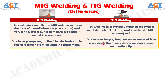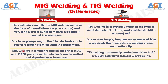This interrupts the welding process unintentionally. Number 7: MIG welding is commonly carried out either in AC or in DCEP polarity so that the electrode can be melted and deposited at a faster rate, whereas TIG welding is commonly carried out either in AC or DCEP polarity to increase electrode life.